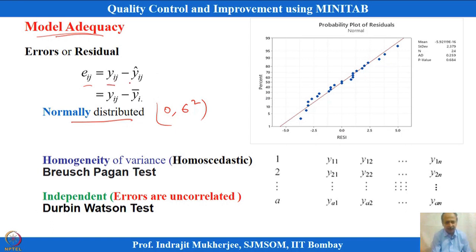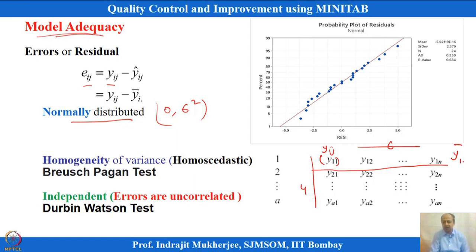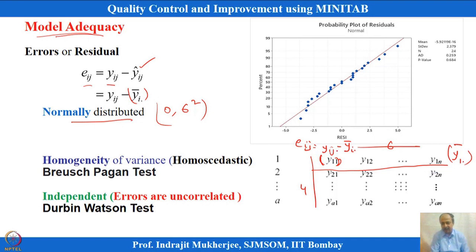The residual is defined as the individual observation Y_ij minus the group average. In the hardwood concentration experiment with 24 observations (4 levels × 6 replicates), for each observation Y_ij we subtract the level average Y_i-dot. This gives the error term e_ij. We get 24 such error values, which can be stored in MINITAB and verified for normality.